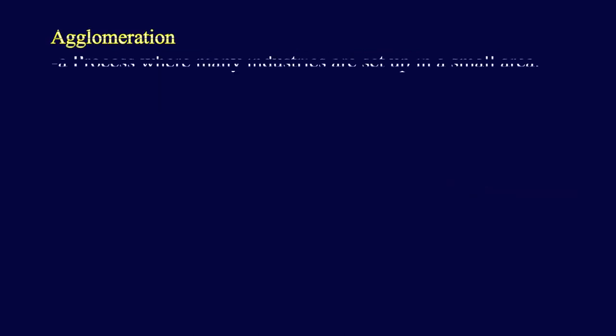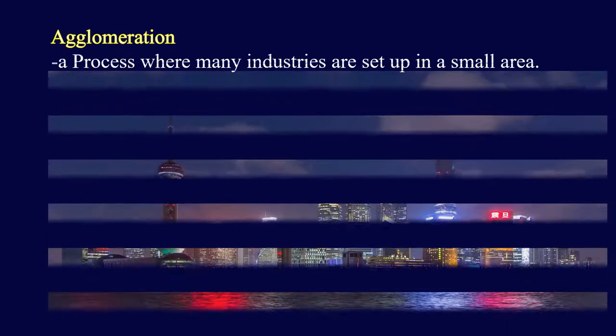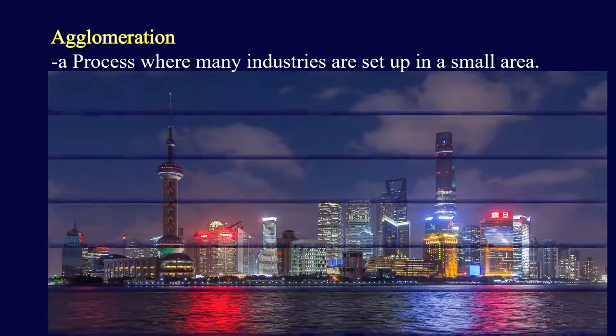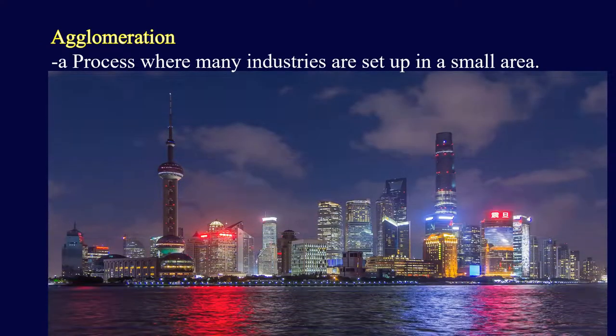What is agglomeration? Agglomeration is a process where many manufacturing industries are set up in a small area.